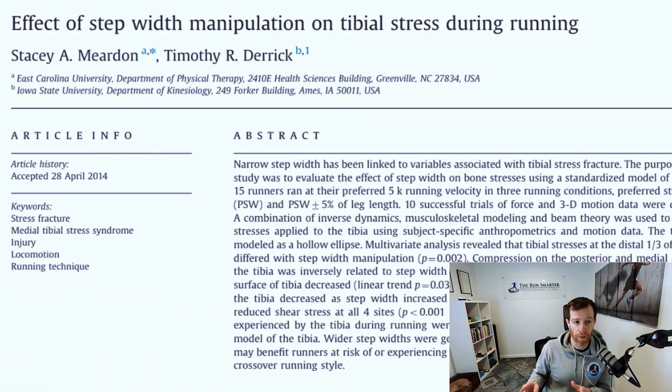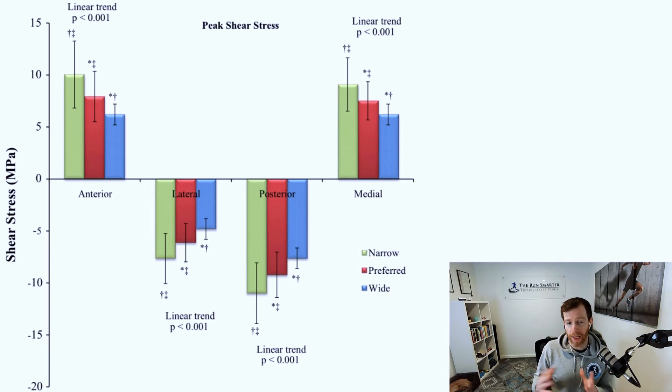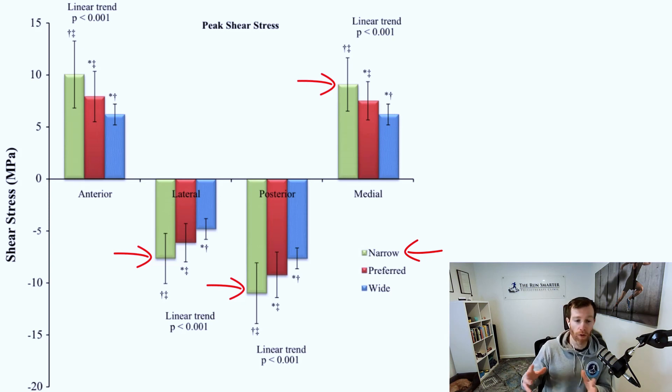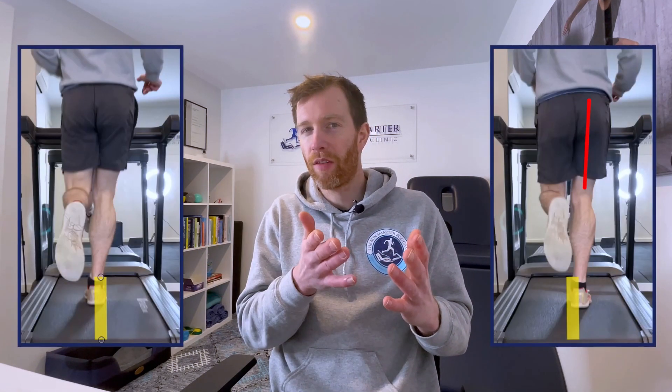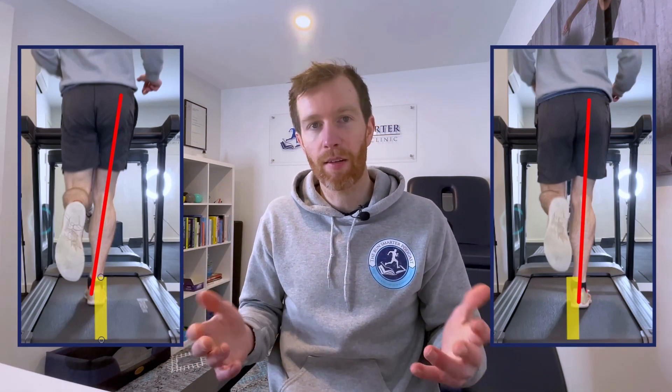The third paper, again from Stacey Meardon, titled 'Effect of Step Width Manipulation on Tibial Stress During Running,' showed that a narrow step width significantly increases peak shear stress on the tibia compared to running with a wide step width. Essentially, a narrow or crossover step width generates unnecessary forces on your body, which can push certain structures into injury territory. The crossover creates more of a cutting action and moves more laterally, which is unnecessary when we're trying to move forward — producing side-to-side forces rather than forward-and-back.